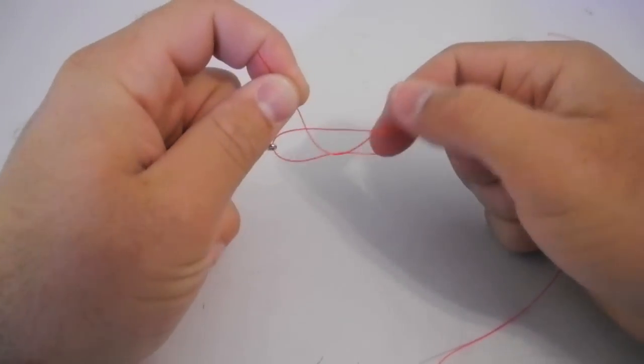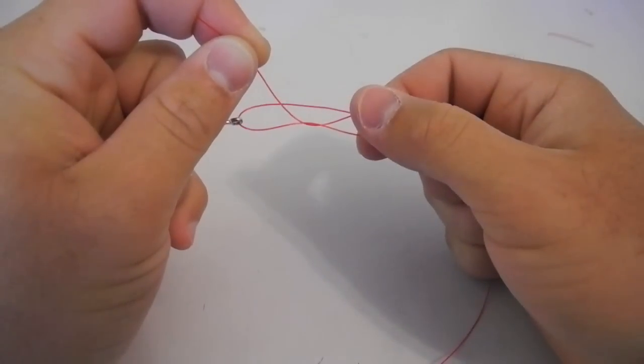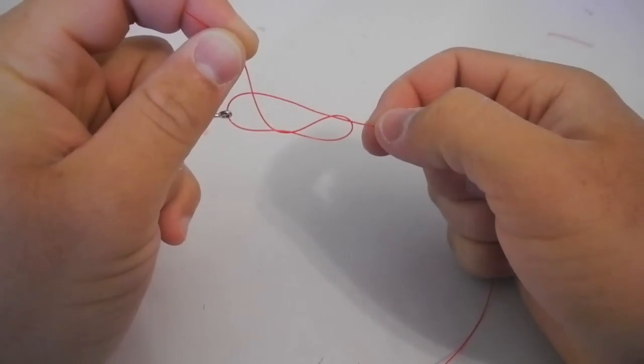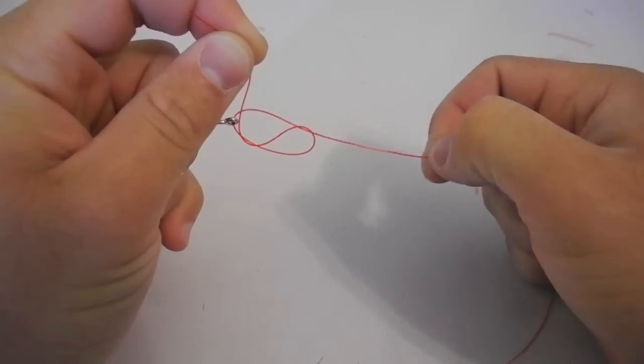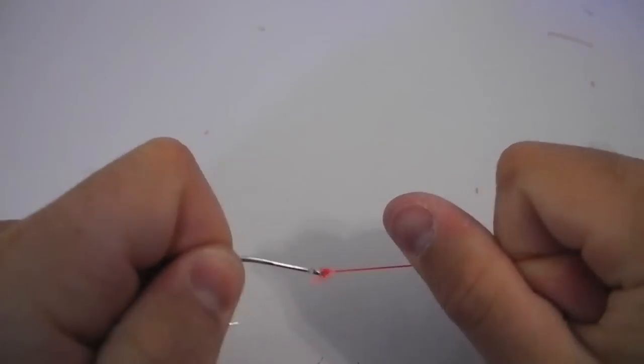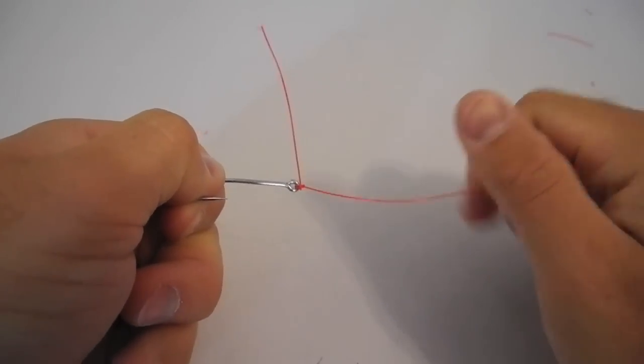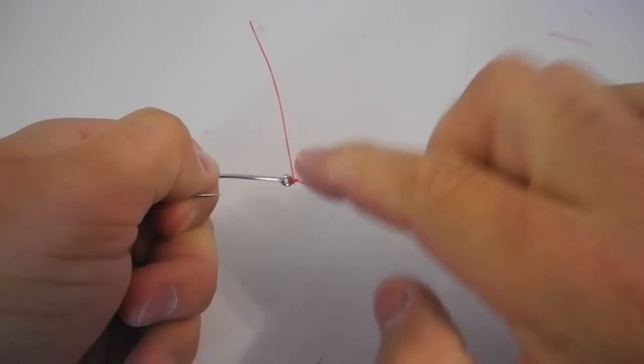And when you do it right, you get a knot that looks like this. And you can see there's not much there. It looks like if I tighten this down, it's just going to fall apart. But as you tighten this down, it is amazing how strong that is. And you know you did it right, because see that 90 degree right there?